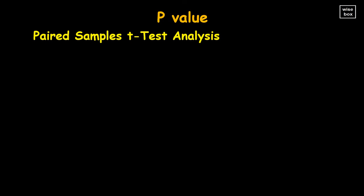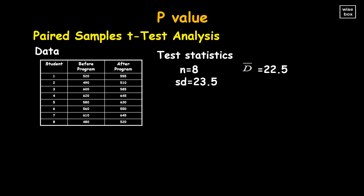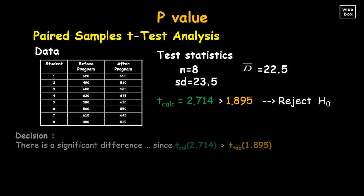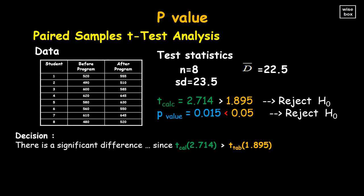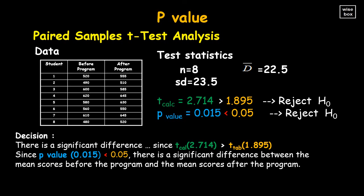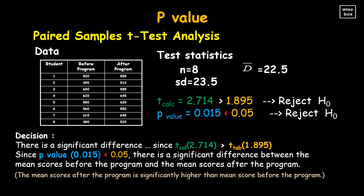For the paired samples t-test example: instead of using the calculated t-value, we can use the computed p-value of 0.015, which is less than 0.05. The null is rejected. Since the p-value of 0.015 is less than 0.05, there is a significant difference between the mean scores before the program and mean scores after the program. It also follows that the mean scores after the program are significantly higher than mean scores before the program.